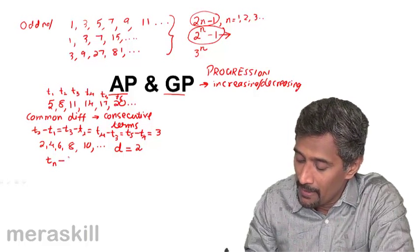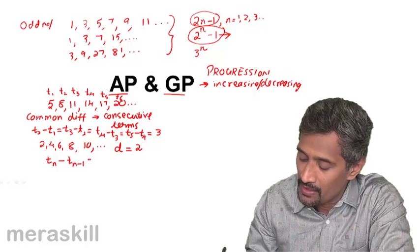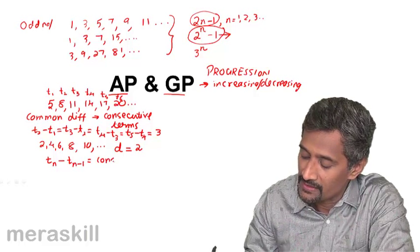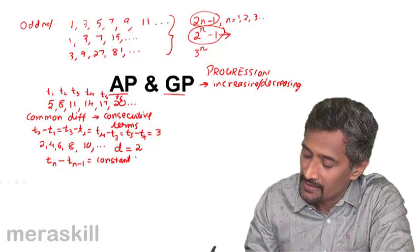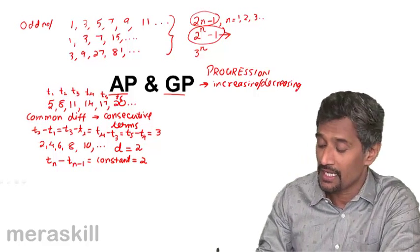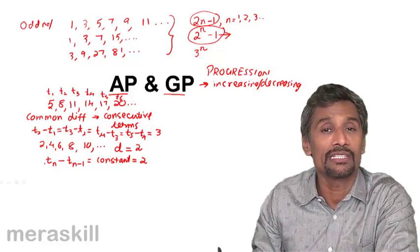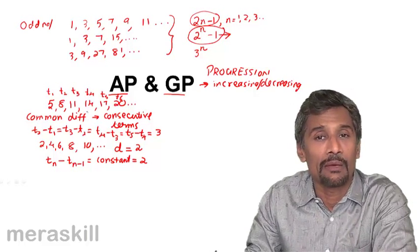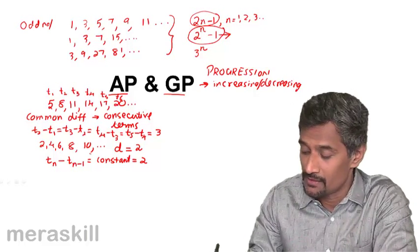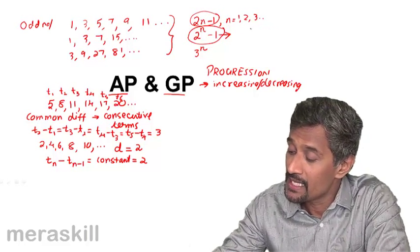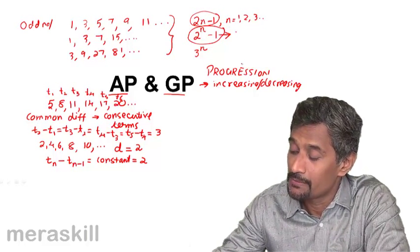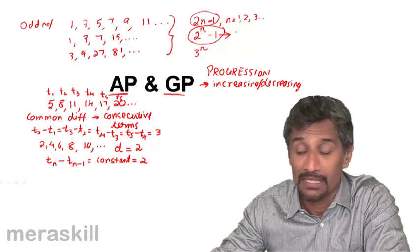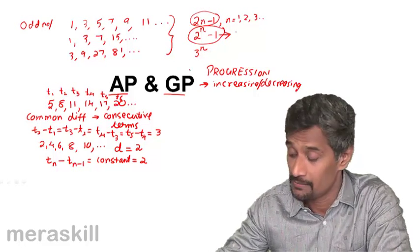So tn minus tn minus 1 is constant. In this case, it is 2. So this kind of a situation we have is called as an arithmetic progression, where consecutive numbers differ by a constant amount. So obviously, this is not an arithmetic progression. This is an arithmetic progression. This again is not an arithmetic progression.